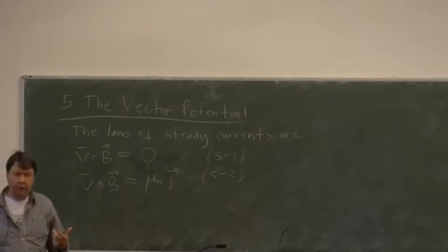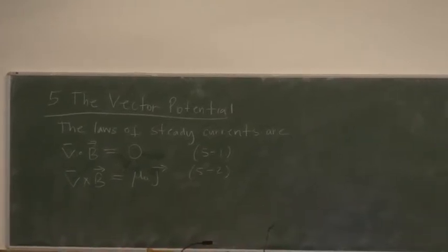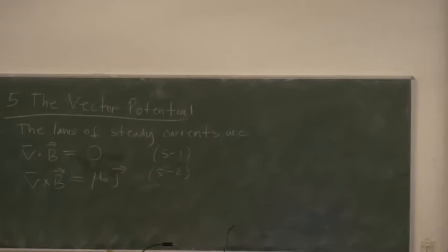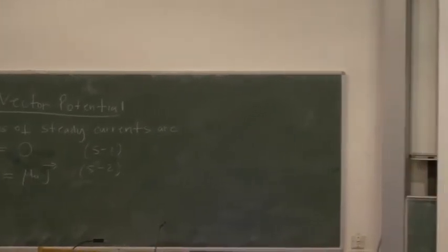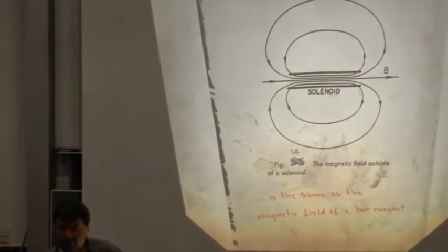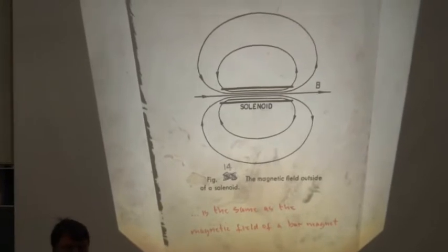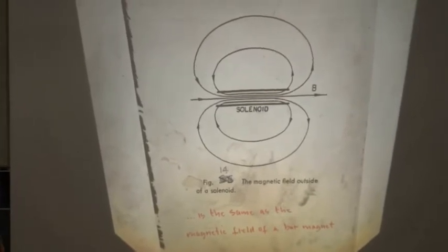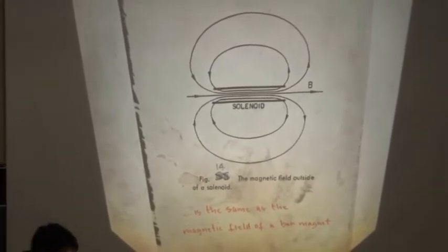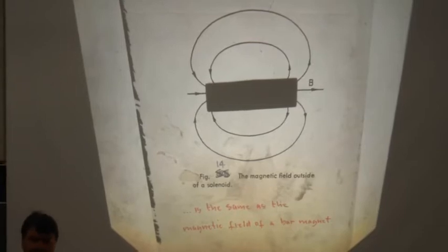We could use equation 5.2 to solve the solenoid, but we were using intuitively that the field lines had to stay parallel inside the solenoid — we were using the experimental fact that the field is big inside the solenoid and very small outside. It's very important to point out, because I know it misleads a lot of people about magnetism.